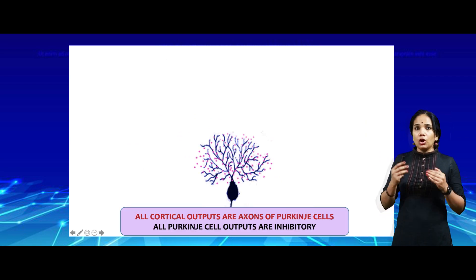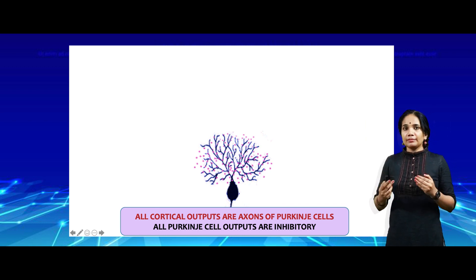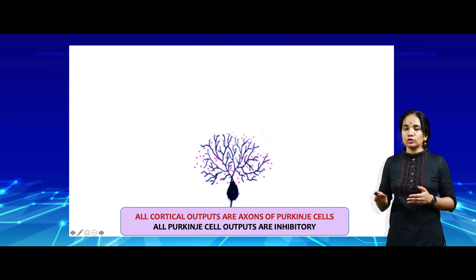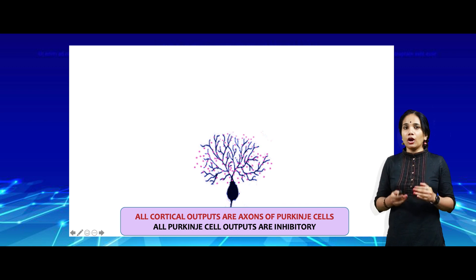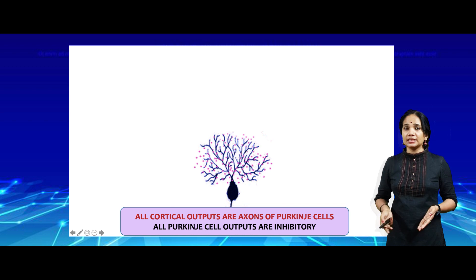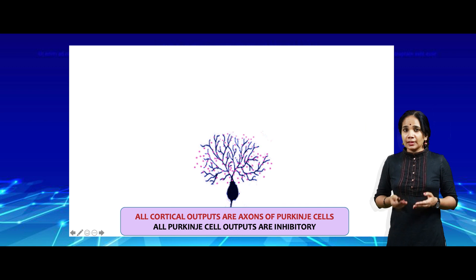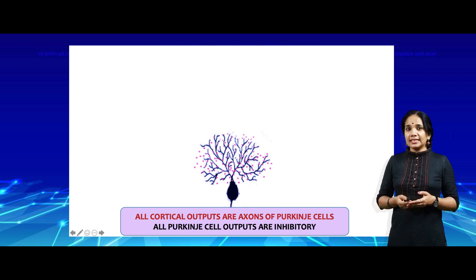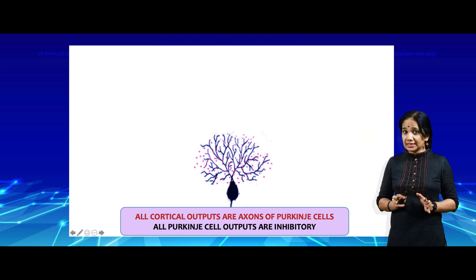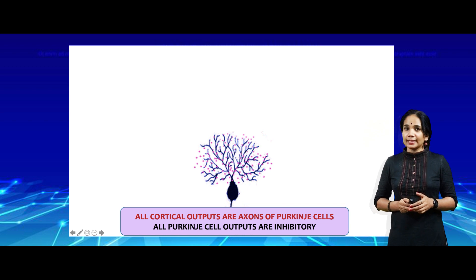All fibers coming into the cerebellum — except those given off to the deep nuclei — reach the cortex. All cortical outputs, meaning all the messages the cortex passes down, are axons of the Purkinje cells. Purkinje cells are the only output from the cortex — note, from the cortex, not from the cerebellum — and all Purkinje cell outputs are inhibitory.